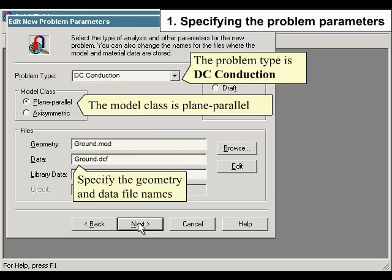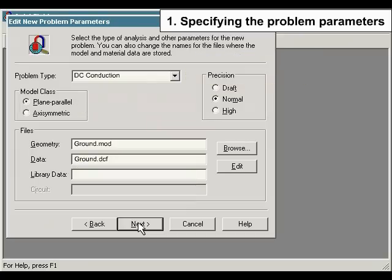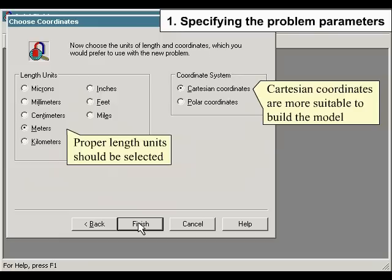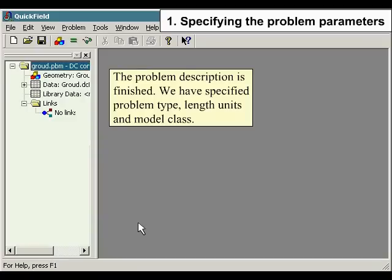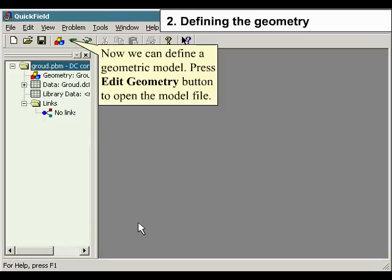Specify the geometry and data file names. Proper length units should be selected. Cartesian coordinates are more suitable to build the model. The problem description is finished - we have specified problem type, length units and model class. Now we can define a geometric model.